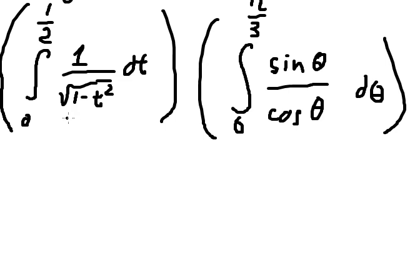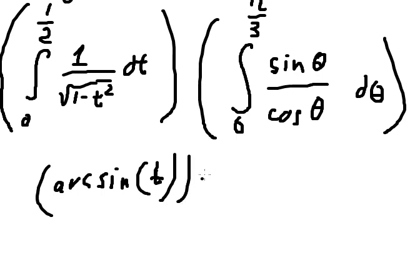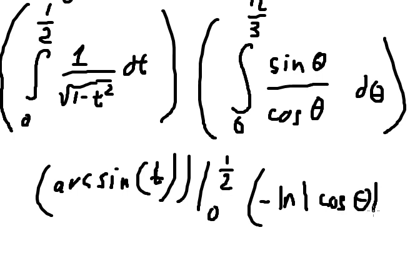The integration of this one, that is about arcsin of t, and we put the bounds from 0 to 1 over 2. The integration of this one, that is about negative natural log of the absolute value of cosine theta, and we put the bounds from 0 to pi over 3.